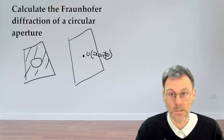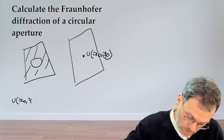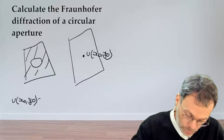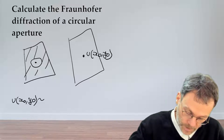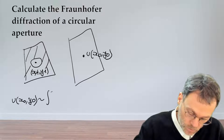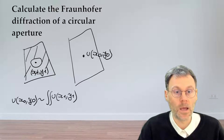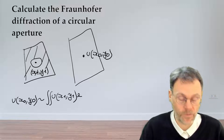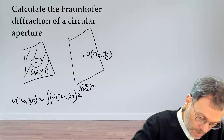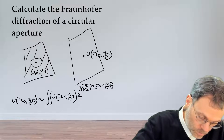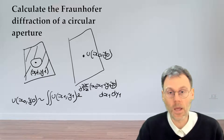What is the field that you see in some x-y plane at a certain distance z from your aperture? Fraunhofer diffraction tells you that the field at coordinates (x₀, y₀) is basically proportional to an integral over the fields in the aperture plane. In the aperture plane, you have coordinates x₁, y₁, giving a two-dimensional integral: u(x₁, y₁) times exp(j·2π/(λz) · (x₀x₁ + y₀y₁)), integrated over x₁ and y₁.